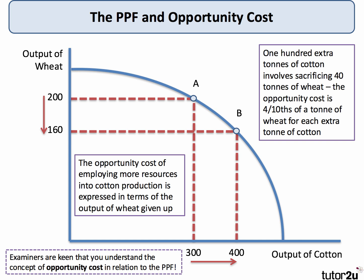Let's take the example of shifting production from A to B along the PPF — in other words, increasing the output of cotton. What we're doing is reallocating our resources of land, labour and capital away from wheat towards increasing the supply of cotton. In our example, an extra 100 tonnes of cotton, as we move down from A to B, involves having to give up 40 tonnes of wheat. So the opportunity cost of the extra output of cotton is 4 tenths of a tonne of wheat for each extra tonne of cotton.